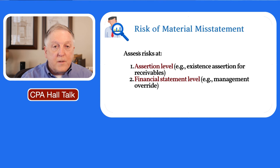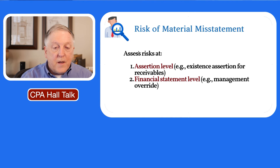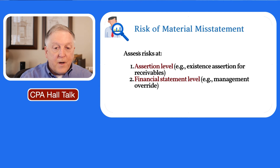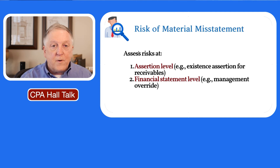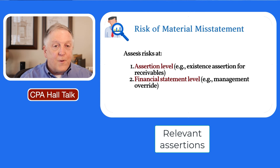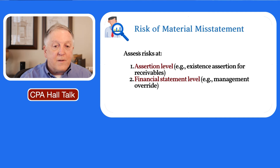When you assess the risk of material misstatement, you need to do so at the assertion level, but also at the financial statement level. For management override, that's a given — you're going to have that risk at the financial statement level, and it is very pervasive, affecting really every account and every disclosure. You need to assess the financial statement level risk of material misstatement, and then the RMMs at the assertion levels for those relevant assertions.